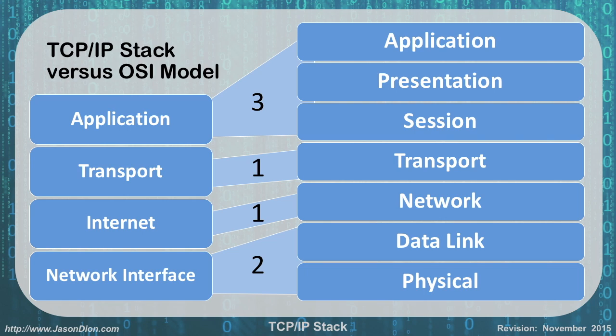So how does this map out? Well, if you take the bottom two layers — the data link and the physical — and scrunch them together, they become the network interface layer. If you keep the network layer, it becomes the internet layer. If you take transport, it's still transport. And you take the top three layers — the application, presentation, and session — and squish them together, they become application. So in the DOD model or the TCP/IP model, it is the network interface, the internet, the transport, and the application.